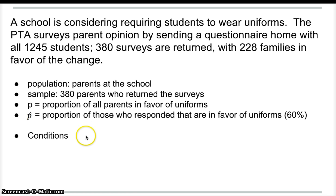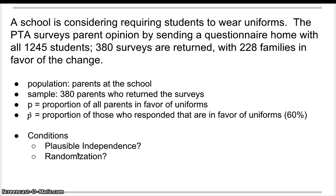Now to check the conditions. The first one is plausible independence — unless one parent and their husband or wife are both sending it in, I would think they're being independent and I would not think of a reason why they would affect each other. Is this random? Again, it's not random — it's biased by non-response. There may be lurking variables that affect the opinions of parents who return surveys and the children who actually deliver them. It would be very unwise to attempt to use this sample to infer anything about the opinion of parents about uniforms. Because one condition doesn't work, just like our previous question, it's not wise to make any statements about what you think might happen based on this information.